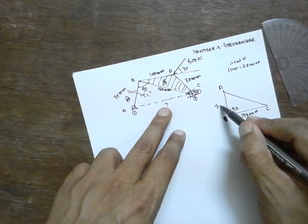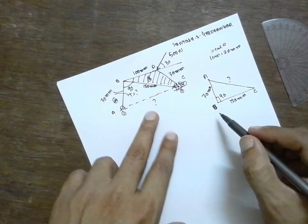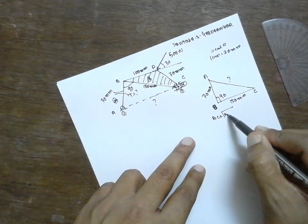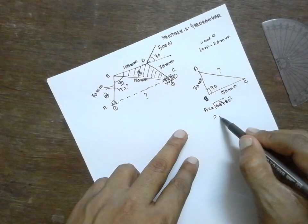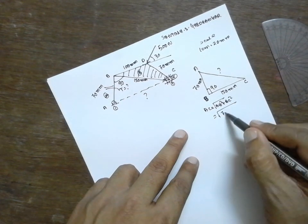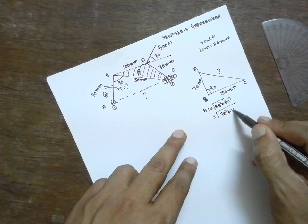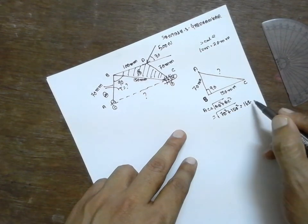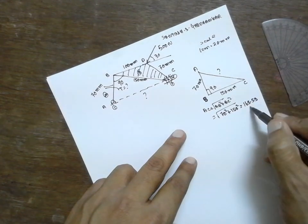Therefore, right angle triangle. AC is equal to root AB square plus BC square. Root 70 square plus 150 square. The answer will be 165.53 mm. This is the answer. Now, distance from A to C is nothing but 165.53.